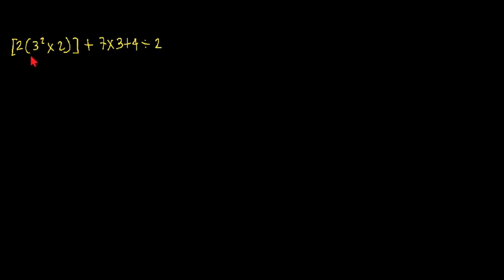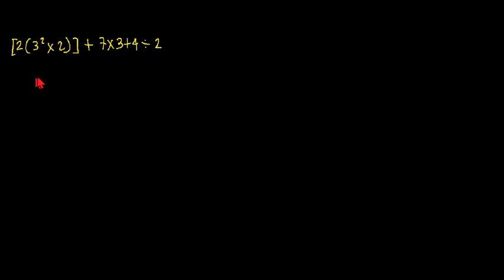So we have here 2 squared. First we will simplify what is inside the parenthesis, then the bracket. The bracket and the parenthesis are of the same purpose — they are used to group operations together. So we will simplify first the expression inside the parenthesis, then the bracket, and from that we will continue to the other operations.